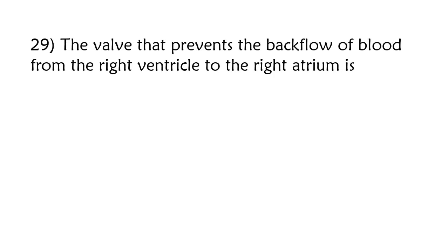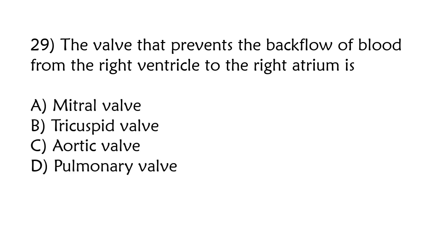The valve that prevents the backflow of blood from the right ventricle to the right atrium is mitral valve, tricuspid valve, aortic valve, pulmonary valve. The correct answer is option B, tricuspid valve.